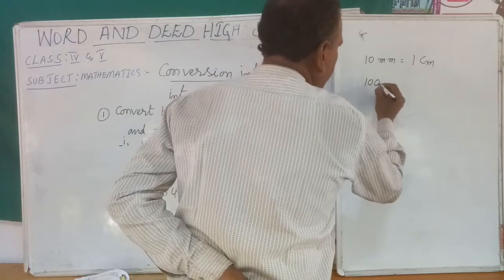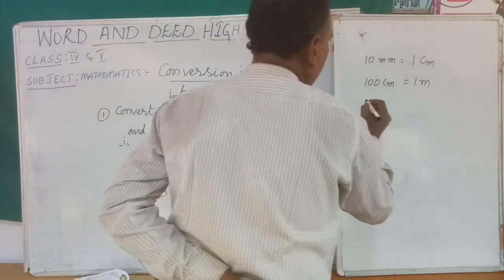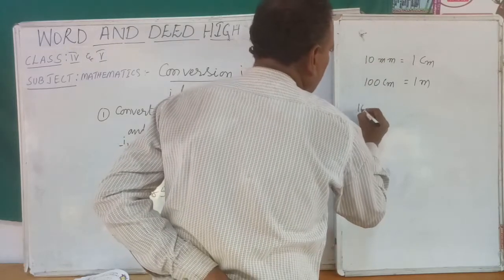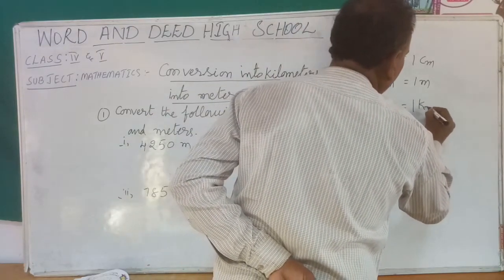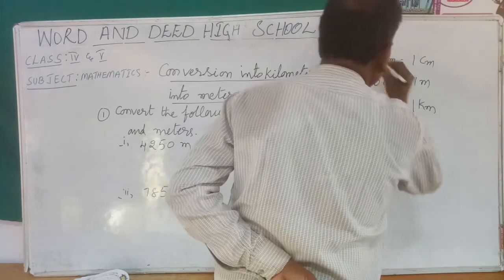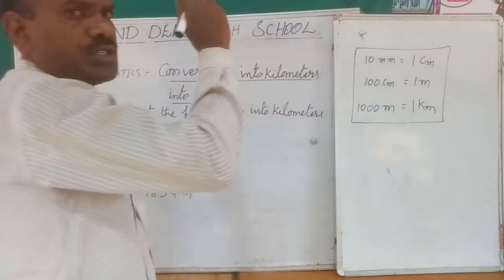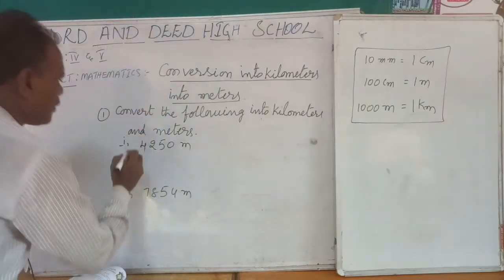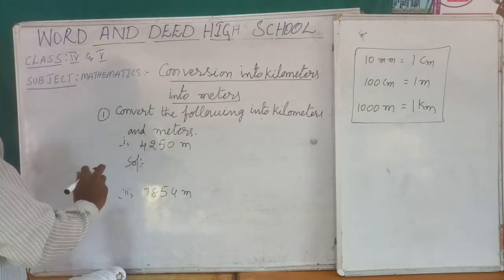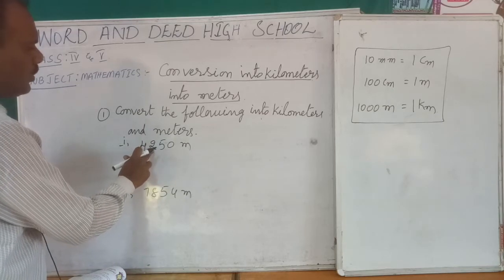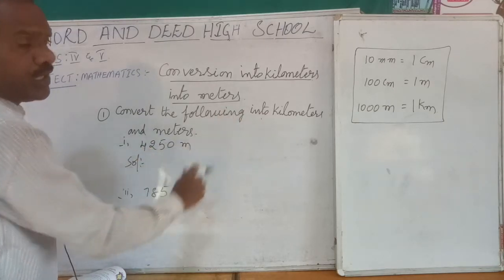100 centimeters equal to 1 meter. 1000 meters equal to 1 kilometer. These are the most important measurements, my dear students. Solution: 4,250 meters converting into kilometers.